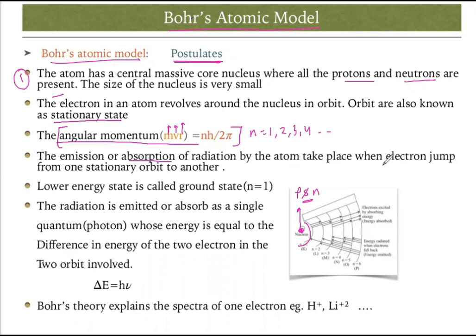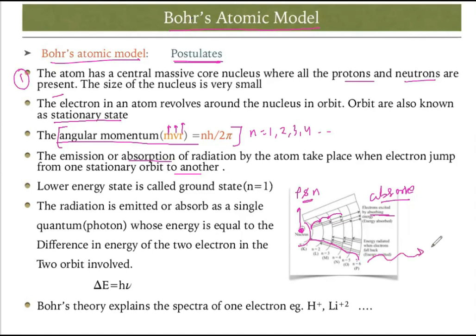The emission or absorption of radiation by an atom takes place when an electron jumps from one stationary state to another. When an electron is in a lower state and jumps to a higher state, the electron absorbs energy. When the electron jumps from a higher to a lower orbit, energy is released. The lowest energy state is called the ground state.